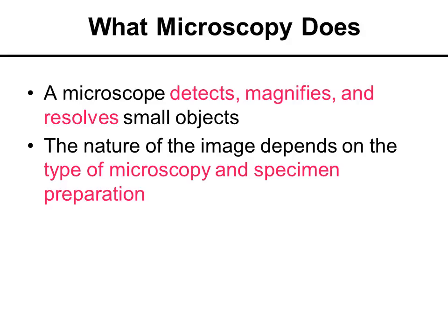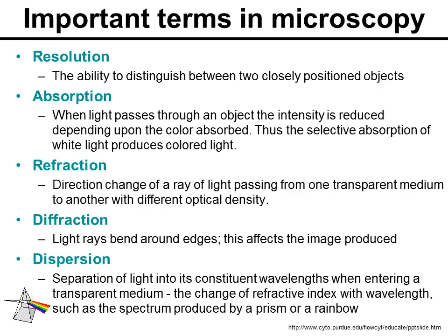What does a microscope do? A microscope detects, magnifies, and resolves very small objects. The nature of the image you obtain with the microscope depends on the type of microscopy used and the type of specimen preparation used to prepare the sample. We're going to take some time to look into this in future slides. Next slide.